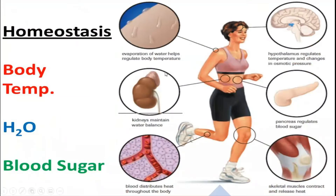The skin is an organ that helps maintain homeostasis. The process of evaporation through sweating glands is activated — it releases sweat and provides an evaporating or cooling effect.